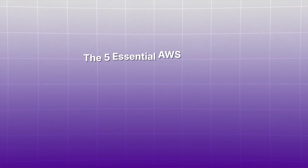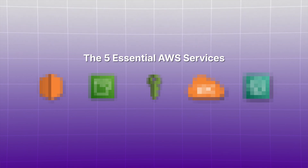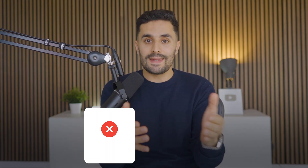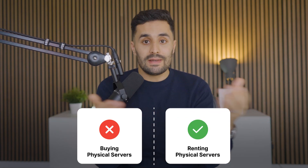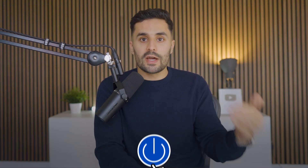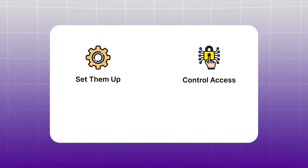Step three is mastering essential cloud concepts. With AWS as your platform, the five essential services start with EC2 — Amazon's way of providing virtual computers in the cloud. Instead of spending thousands on physical servers, you rent computing power when you need it. You can spin up a server for a month, an hour, or a year and shut it down when you're done. These virtual machines can handle everything from running websites to processing complex data.